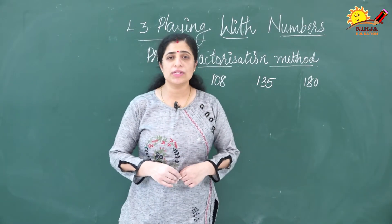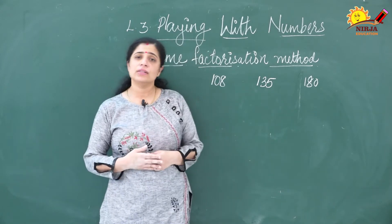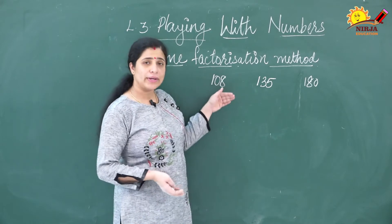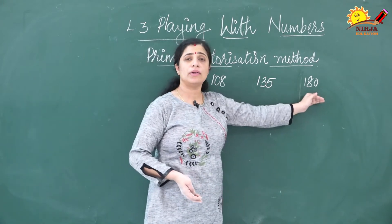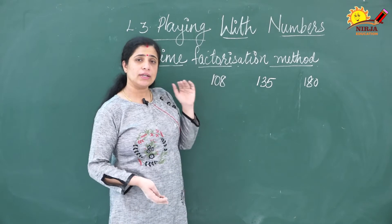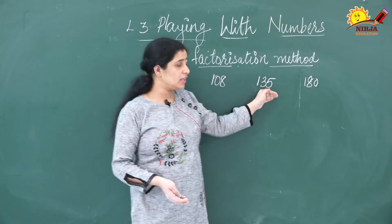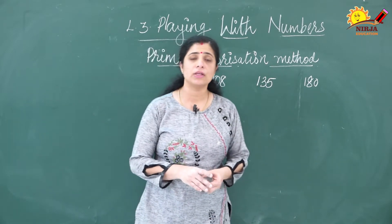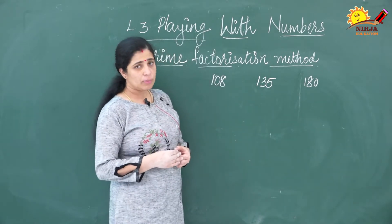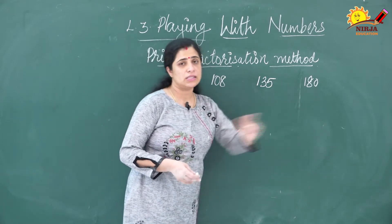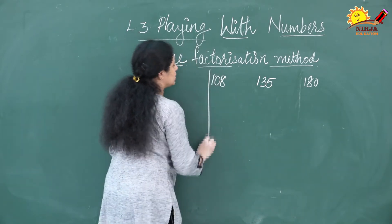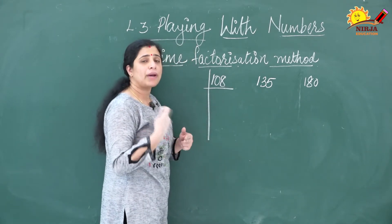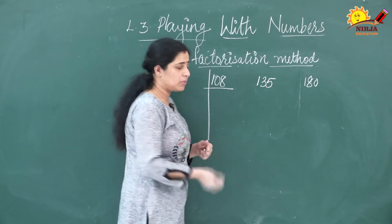Next we are going to discuss the prime factorization method to find the LCM. Here I have taken three numbers: 108, 135, and 180. We are going to find the LCM using the prime factorization method. First we have to prime factorize these numbers — to do the prime factorization, you have to divide using only prime numbers.